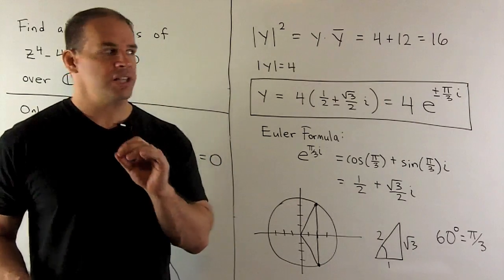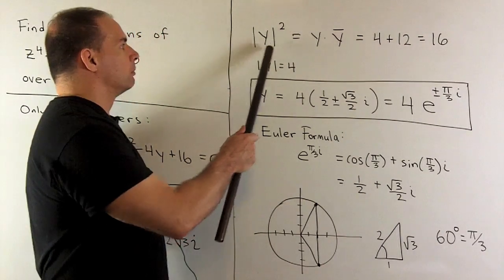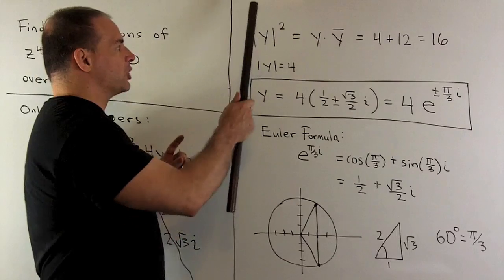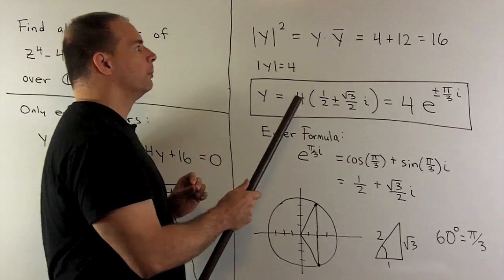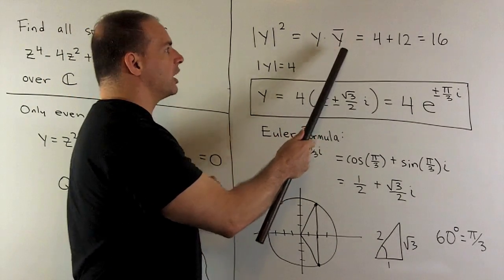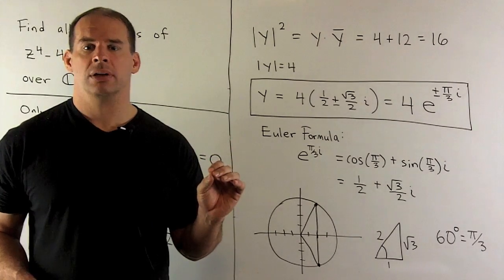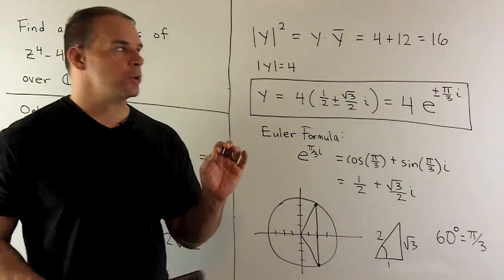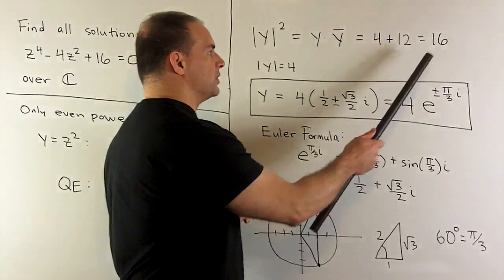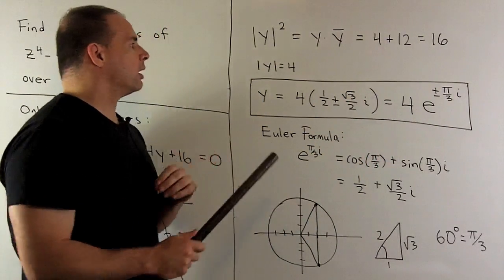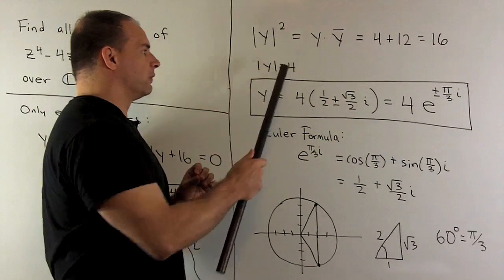To find the modulus, we take our complex number. The modulus squared is going to be equal to our number times its conjugate, which is the same as taking the sum of the squares of the real and imaginary parts. So for both our solutions, we'll have 4 plus 12 is equal to 16, or the modulus for each solution is equal to 4.